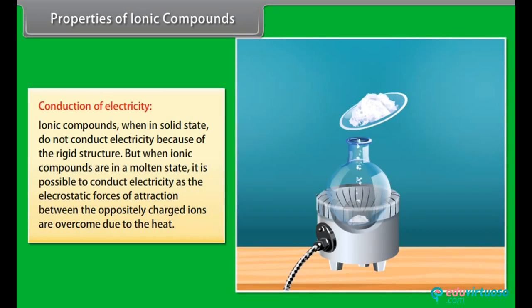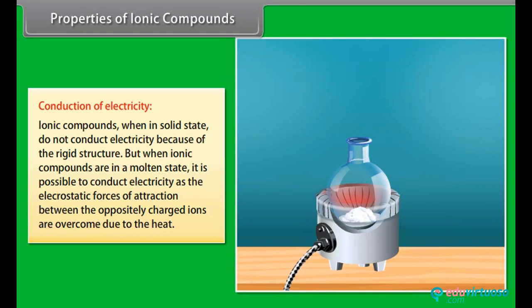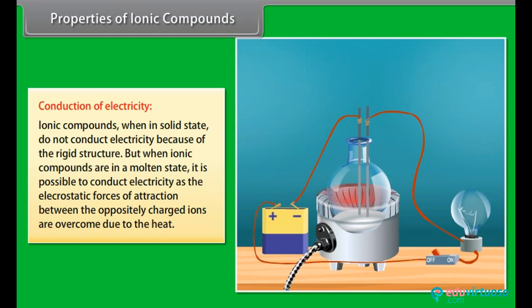Conduction of Electricity: Ionic compounds, when in solid state, do not conduct electricity as the movement of ions is not possible because of the rigid structure. But when Ionic compounds are in a molten state, it is possible to conduct electricity as the electrostatic forces of attraction between the oppositely charged ions are overcome due to the heat. This leads to ions to move freely and conduct electricity.